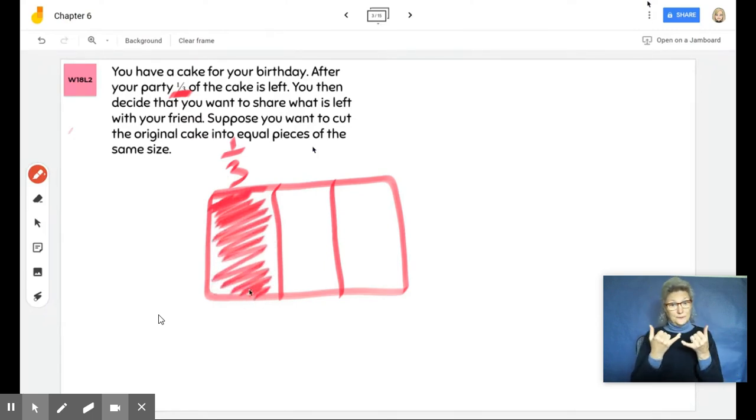Now, what if instead of just sharing this with one of my friends, we wanted to share this with three of our friends? We have to include ourselves in our thought process here. That means that of this one third here, we want to share that with four people total because we want to include ourselves in that.